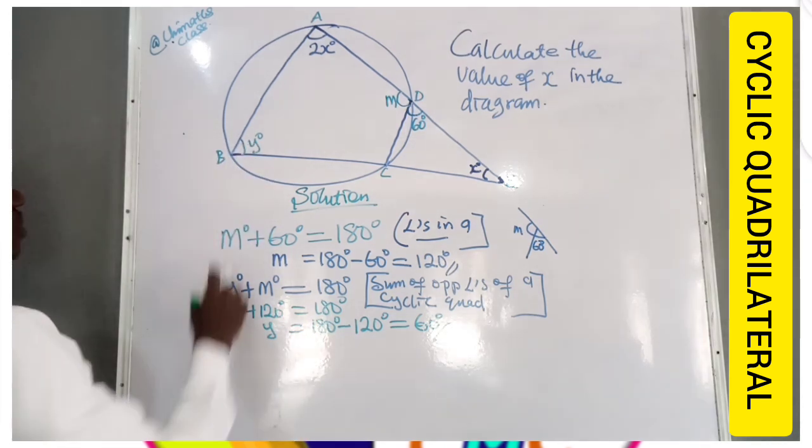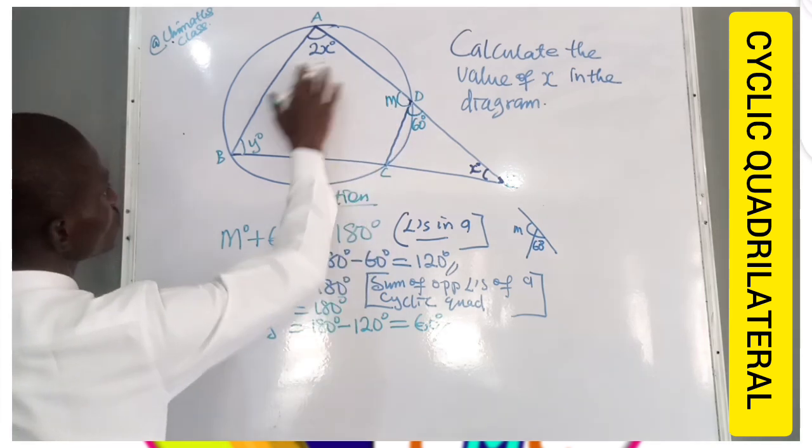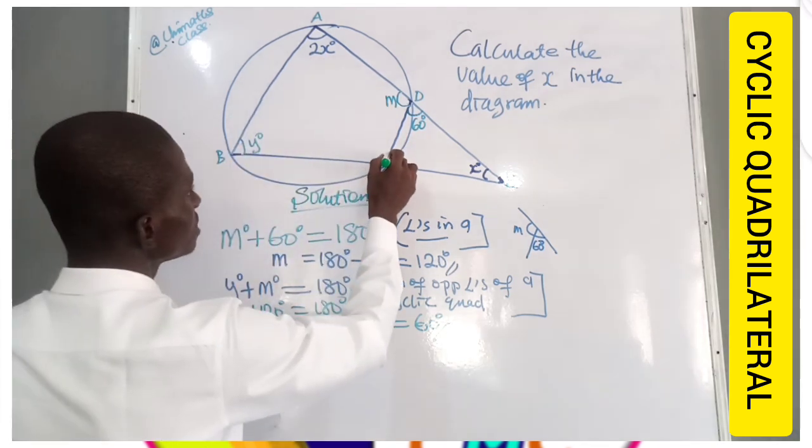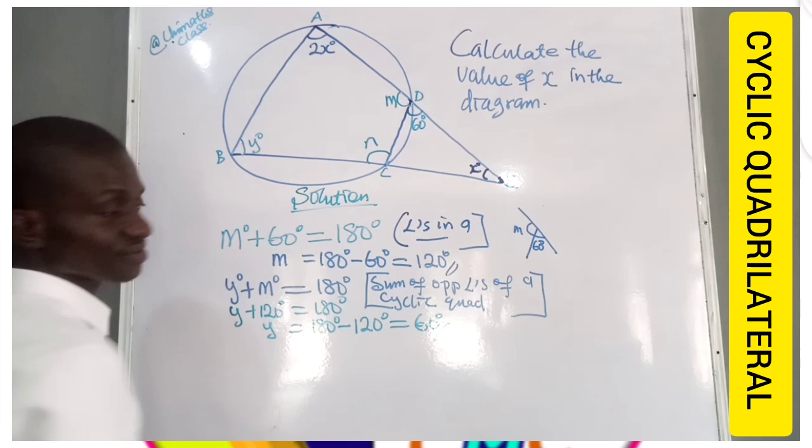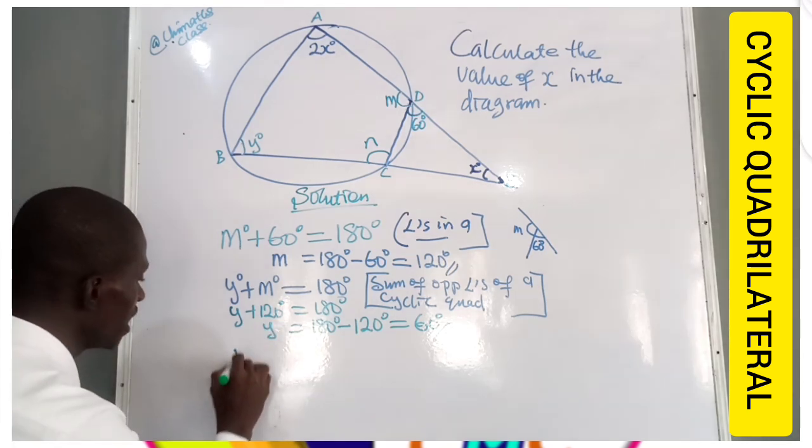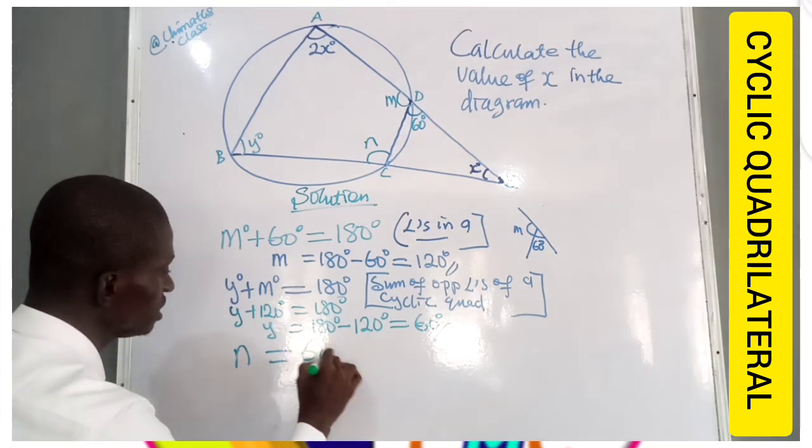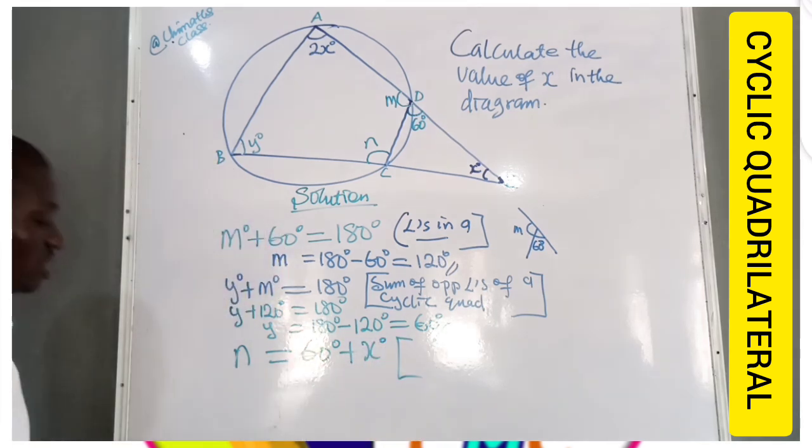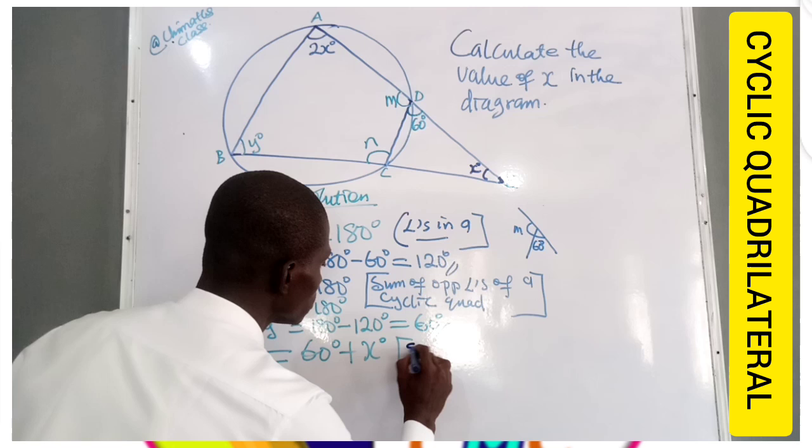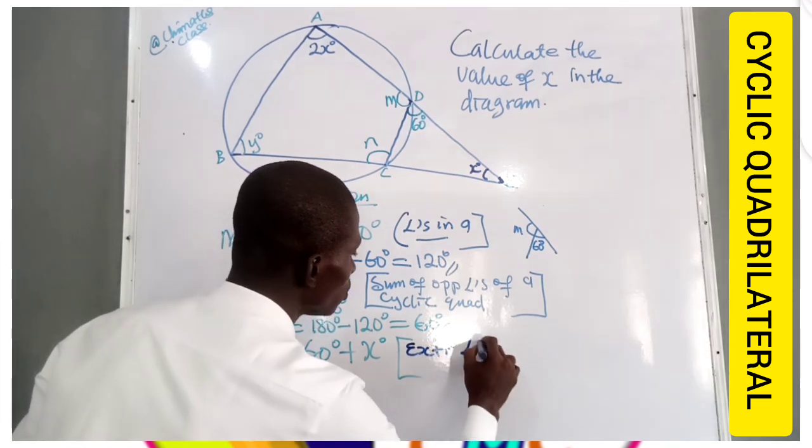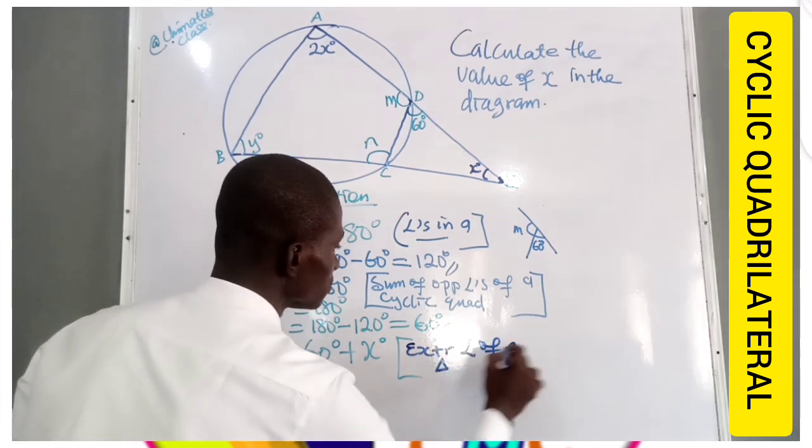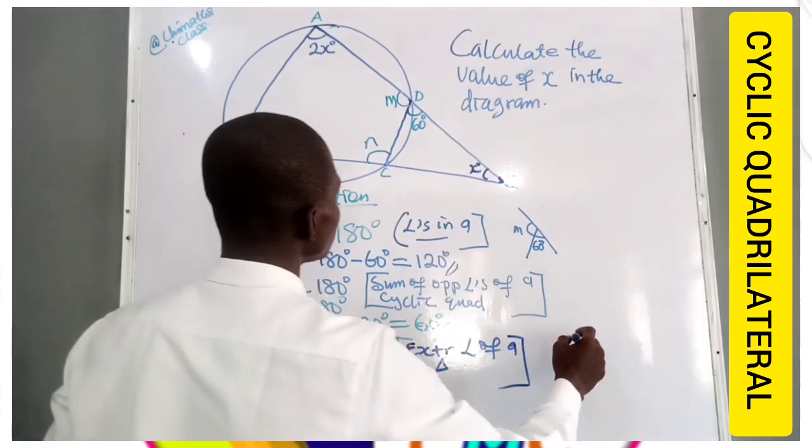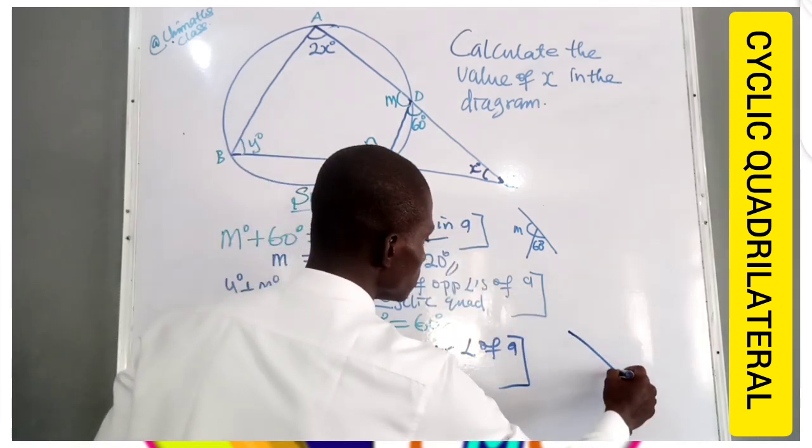Now, we have found Y and M and need to find X. Can we find this angle? Let's call it angle N. Now, we have N is equal to 60 degrees plus X. So what is the reason? The reason is an exterior angle of a triangle.